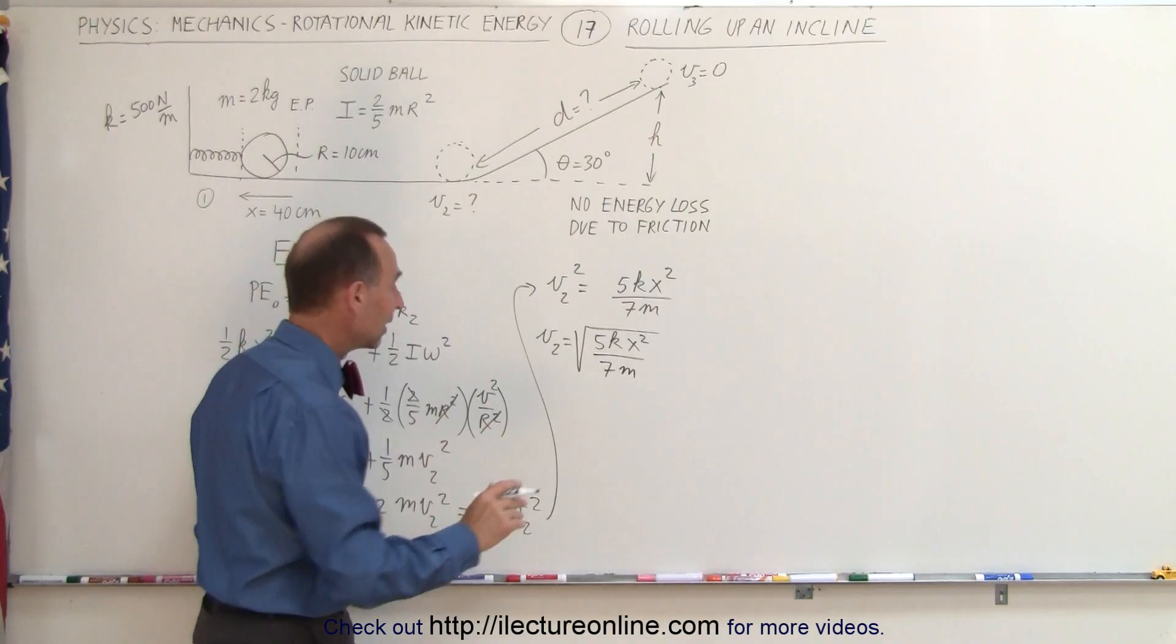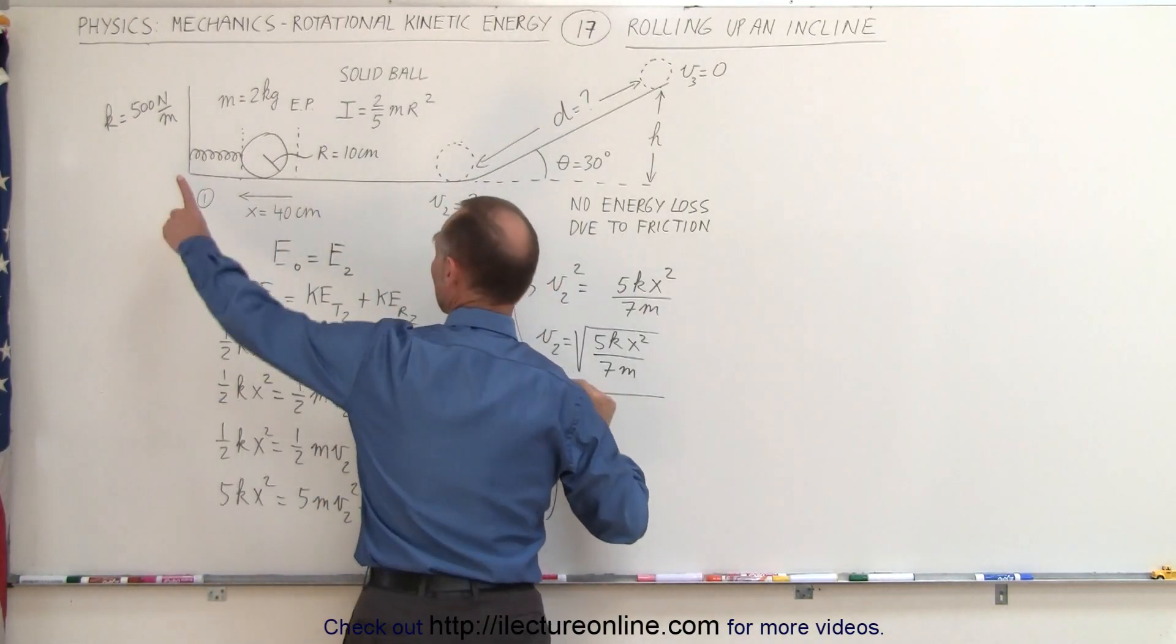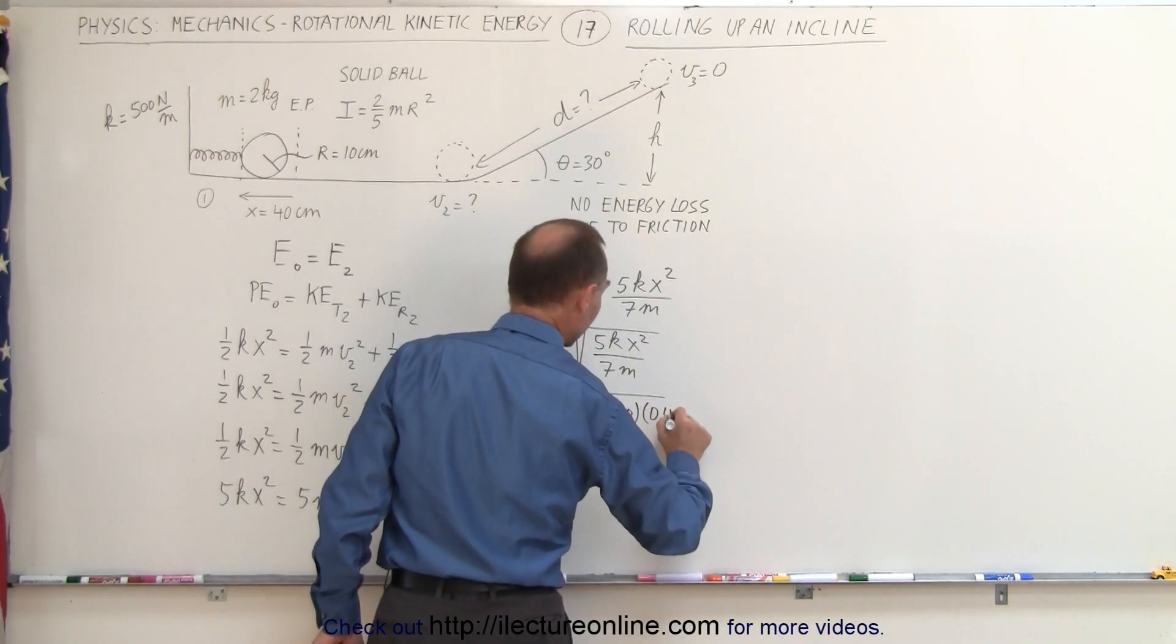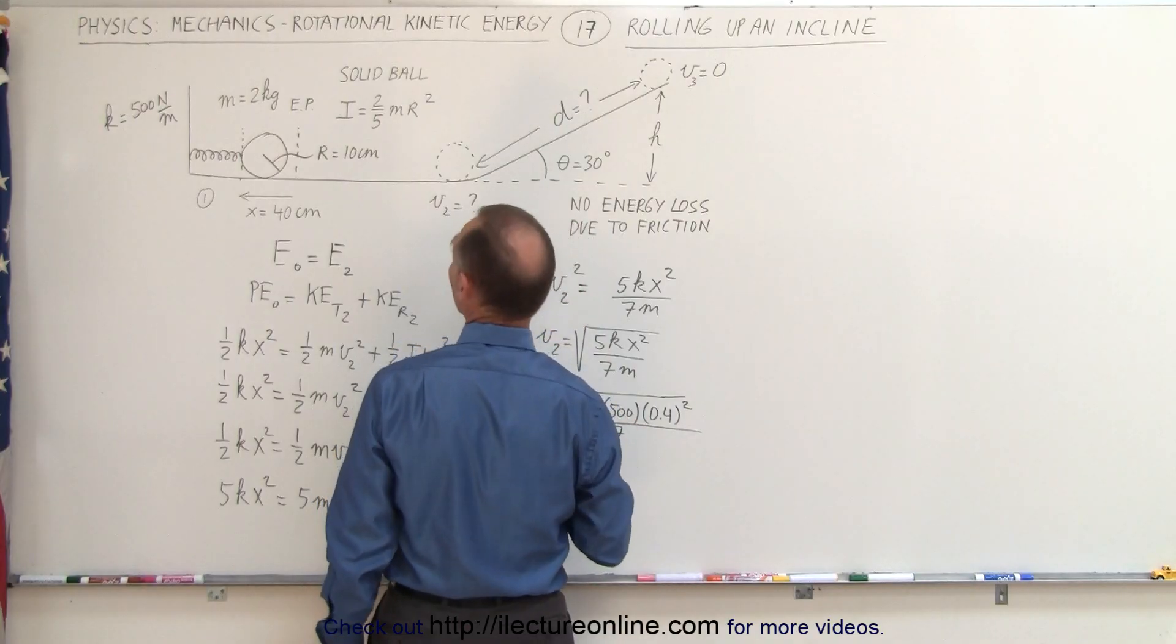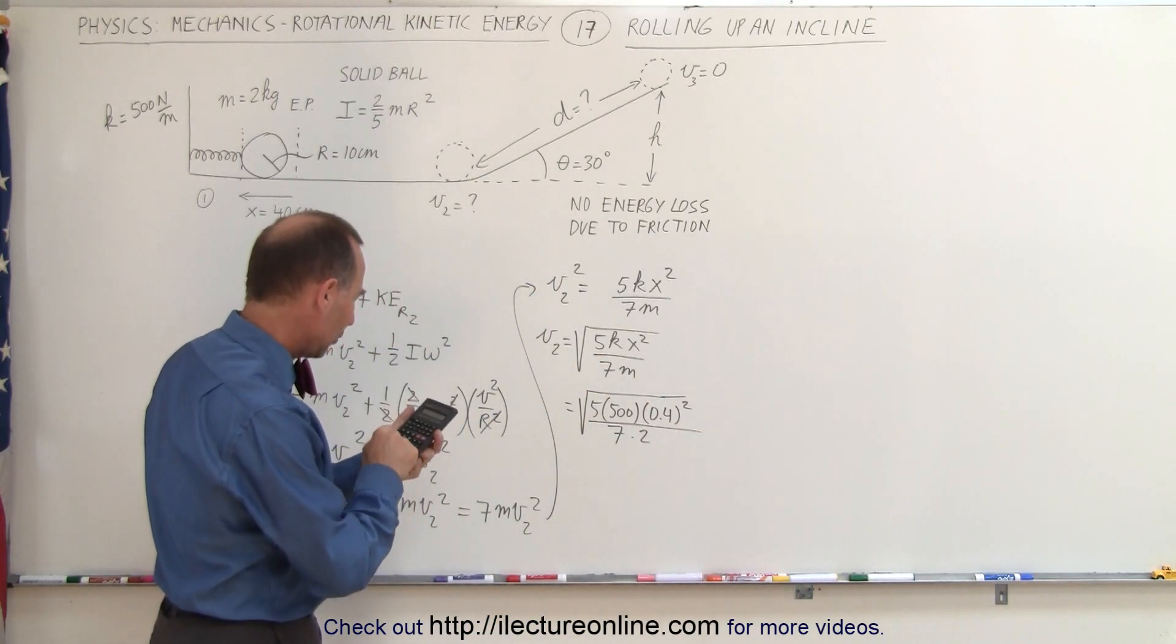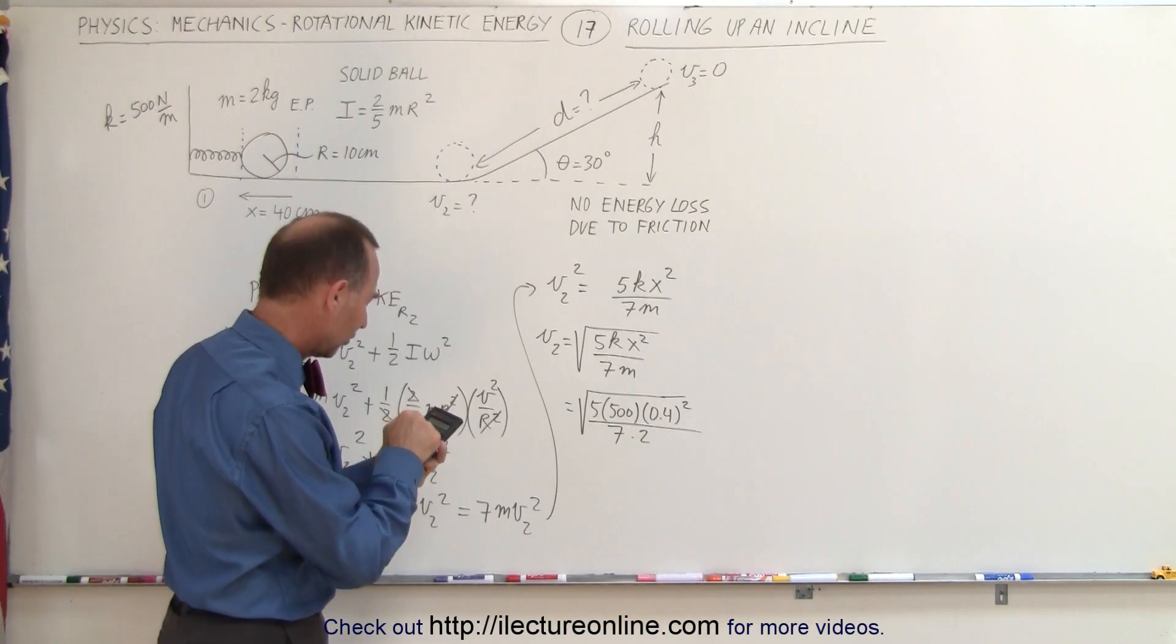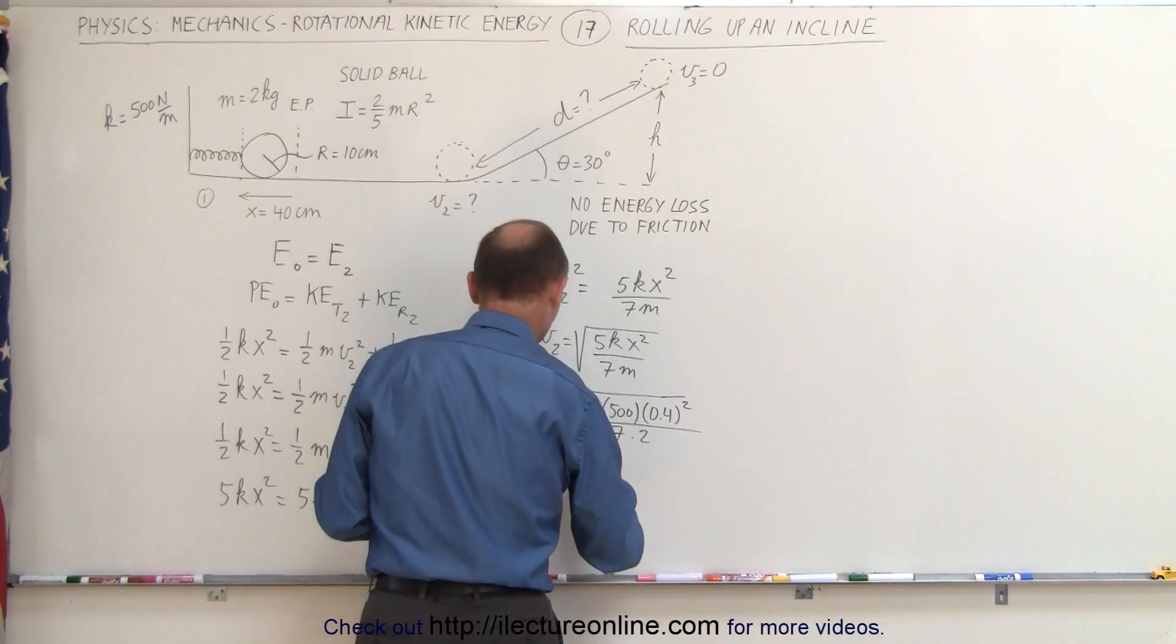Now let's plug in the values and see what we get. This equals the square root of 5 times k, which was 500, times x, which was 0.4 because we converted to meters, we squared that, divided by 7 times the mass, which is 2 kg. Now with the calculator, we'll find out what that is equal to. We have 0.4 squared times 500 times 5 divided by 7 divided by 2, take the square root, and we get 6.48 meters per second.